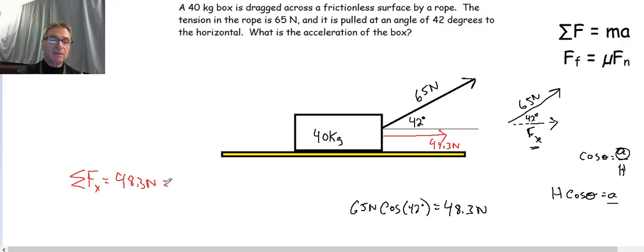And that's going to be equal to ma. Ma is the mass of the block, that's 40 kilograms, and a is our acceleration. When I do the math, I get 48.3 Newtons divided by 40 kilograms, and that is equal to 1.2 meters per second squared.